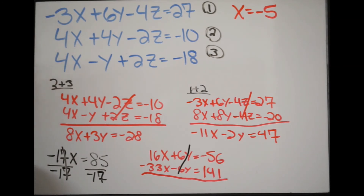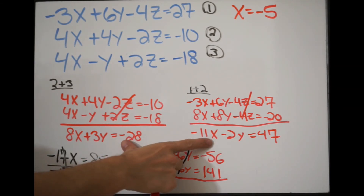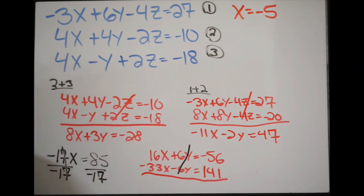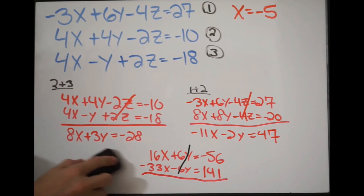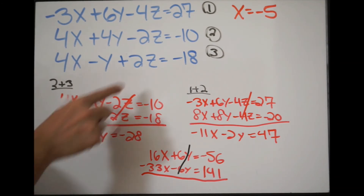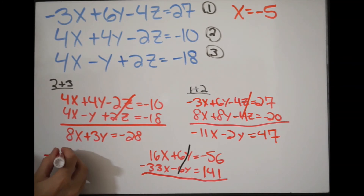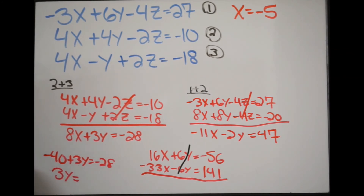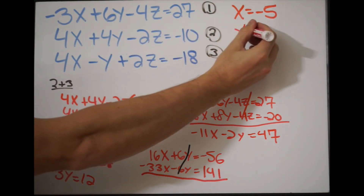You just did the hardest part — now all you have to do is go in reverse. Let's go back to our 2x2 system of equations and plug in x to solve for y. Picking the first equation: 8 times negative 5 gives negative 40, so negative 40 plus 3y equals negative 28. Adding 40 to both sides gives 3y equals 12, and dividing both sides by 3 gives y equals 4.